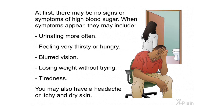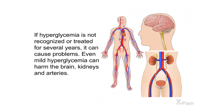At first there may be no signs or symptoms of high blood sugar. When symptoms appear, they may include urinating more often, feeling very thirsty or hungry, blurred vision, losing weight without trying, and tiredness. You may also have a headache or itchy and dry skin. If hyperglycemia is not recognized or treated for several years, it can cause problems — even mild hyperglycemia can harm the brain, kidneys, and arteries.